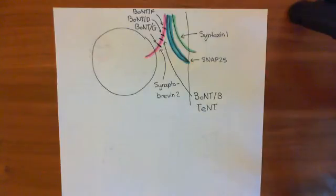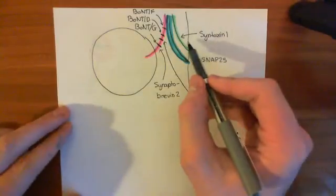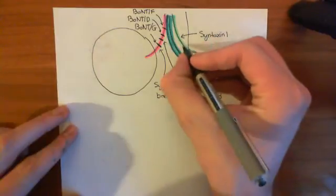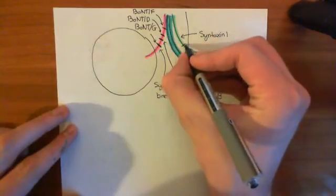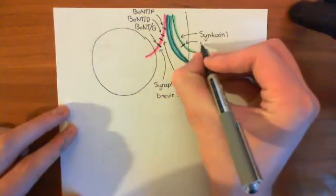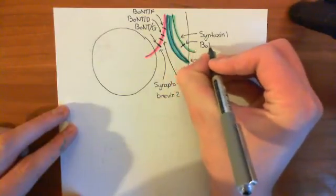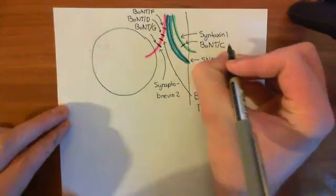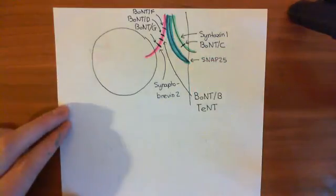Okay, so the next one we'll discuss is syntaxin 1. Now, this one's nice and simple. There is only one botulinum neurotoxin that targets syntaxin 1, and that is botulinum neurotoxin C. So botulinum neurotoxin C is going to cut syntaxin 1.